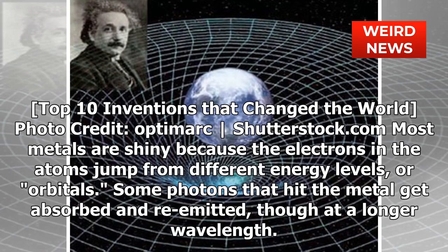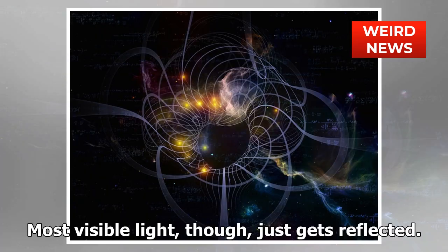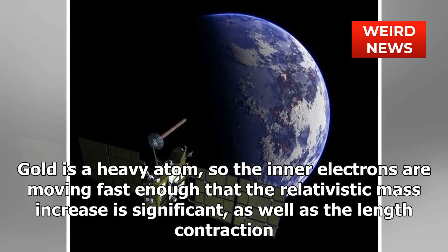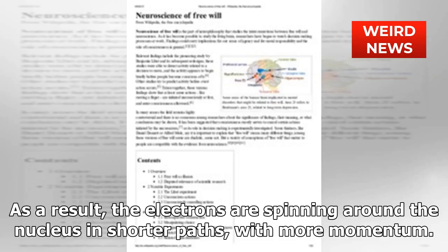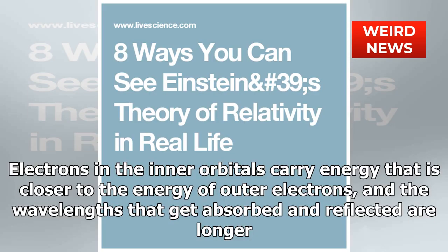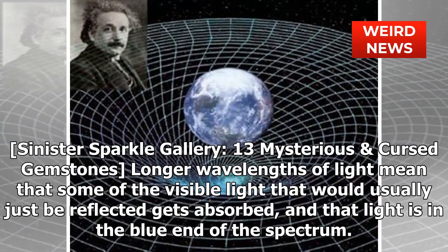Most metals are shiny because the electrons in the atoms jump between different energy levels or orbitals. Some photons that hit the metal get absorbed and re-emitted at a longer wavelength, while most visible light just gets reflected. Gold is a heavy atom, so the inner electrons are moving fast enough that the relativistic mass increase is significant, as well as the length contraction. As a result, electrons spin around the nucleus in shorter paths with more momentum, and electrons in the inner orbitals carry energy closer to that of the outer electrons, so the wavelengths that get absorbed and reflected are longer.